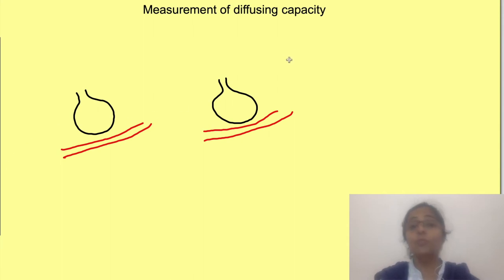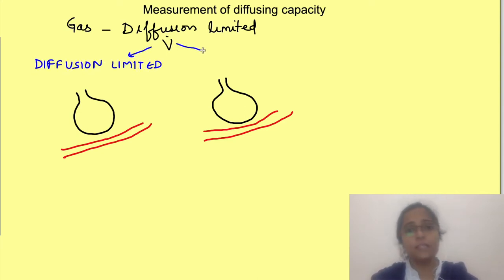So let us see now how it is actually measured. This diffusion capacity is measured using a gas whose rate of diffusion is diffusion limited. See there are two types of gases when diffusion is considered. One the gases whose rate of diffusion is diffusion limited and the other where it is perfusion limited. Diffusion limited means that within the time a column of blood is present near the alveoli, the gas is not able to equilibrate across alveoli and blood. That is more time is required for partial pressure to become equal on both sides.